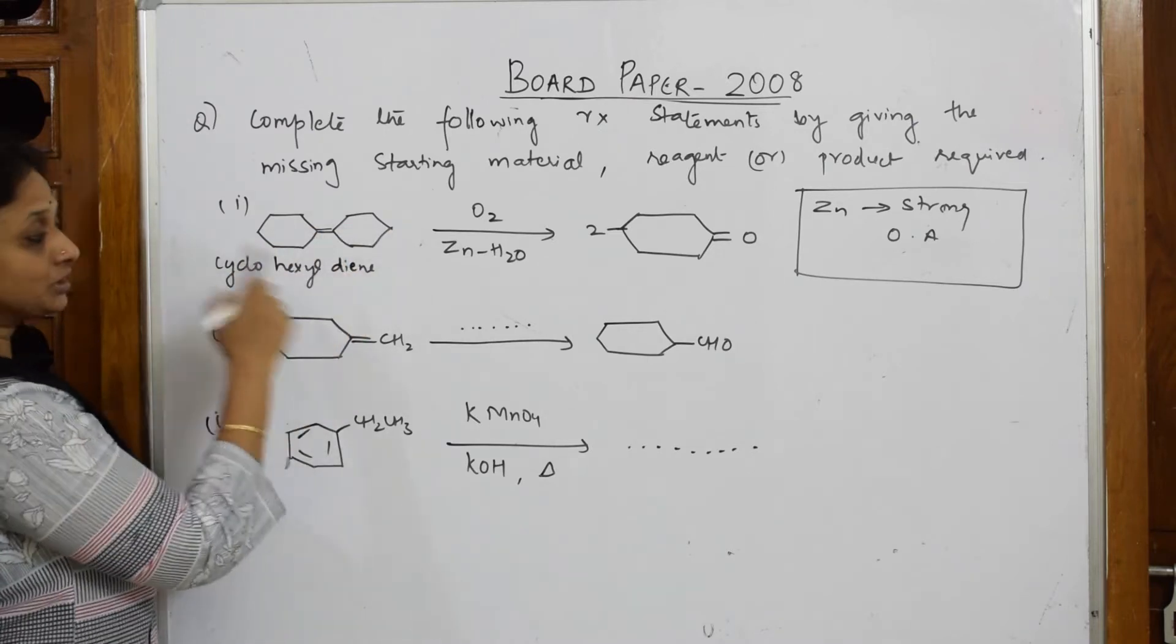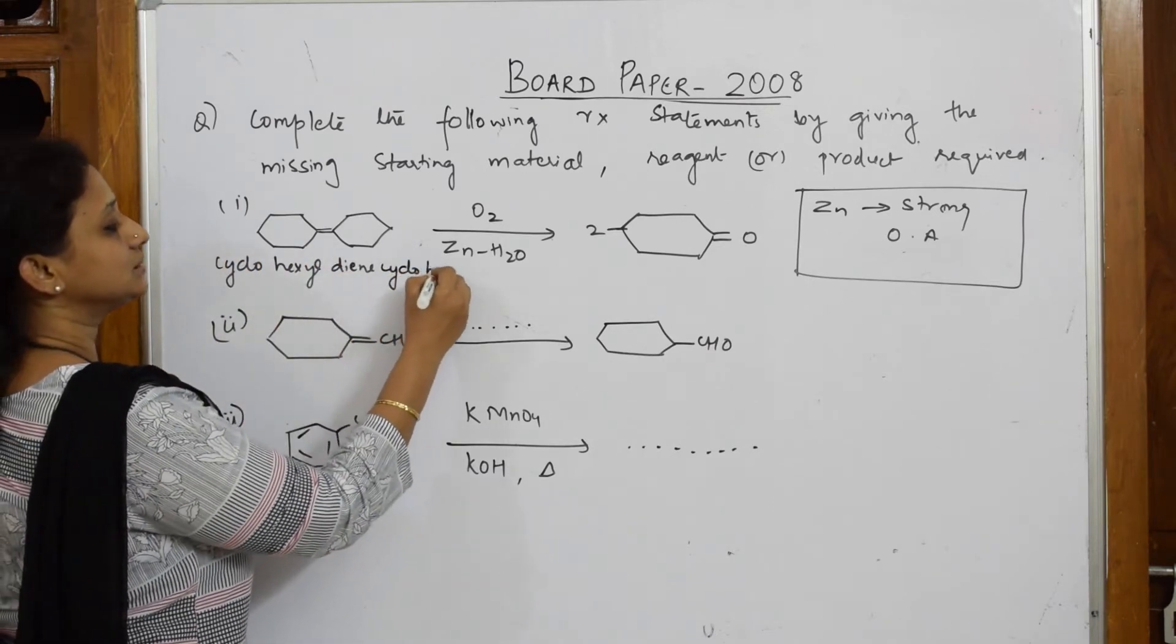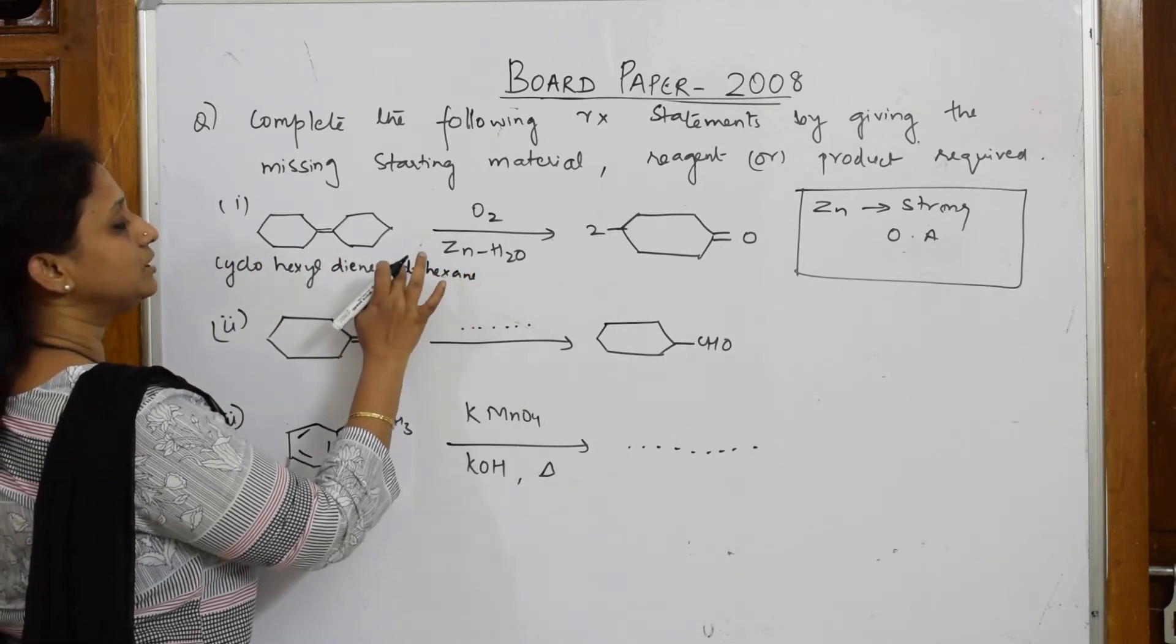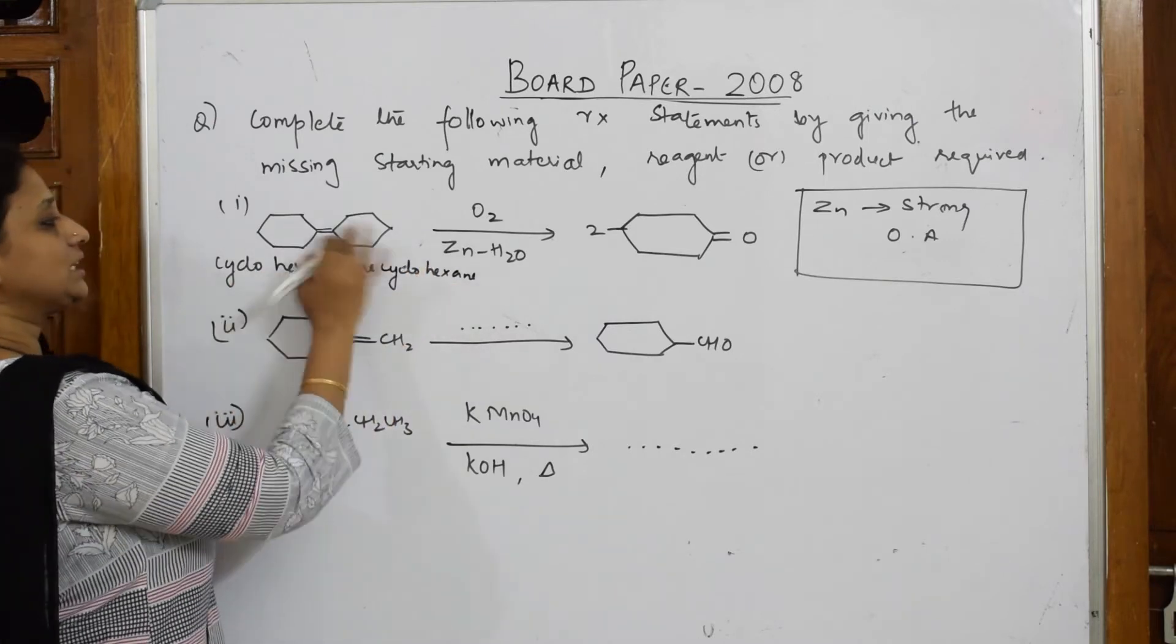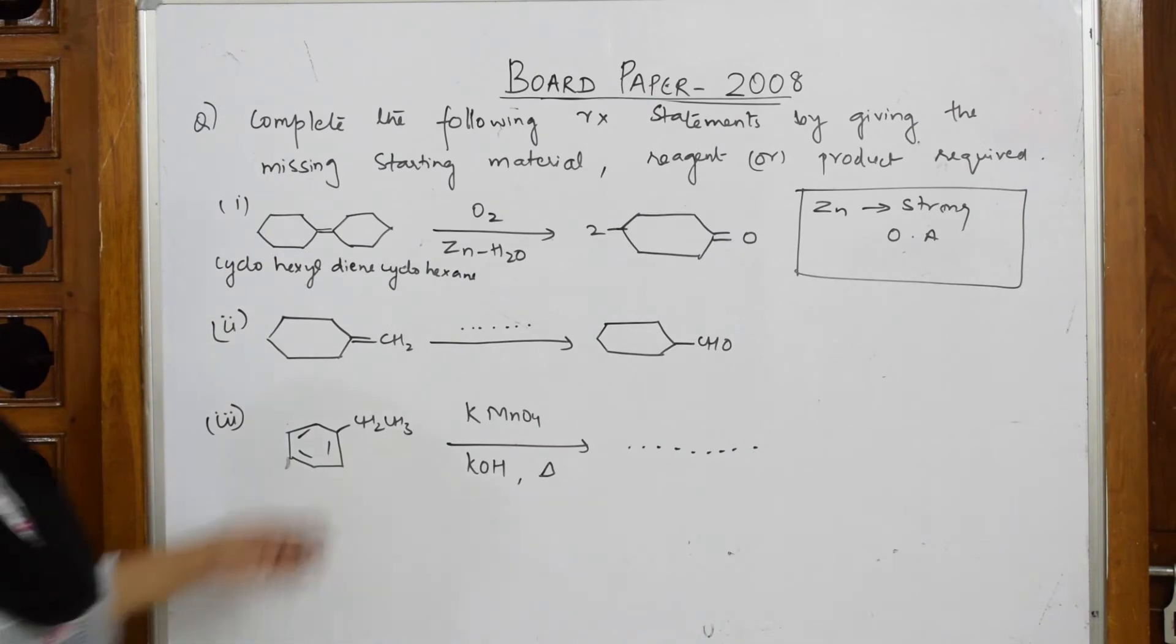Diene means double bond between two cyclohexane. This is your compound. You have to name the compound cyclohexyl diene. Cyclohexane is a compound. This is the answer.